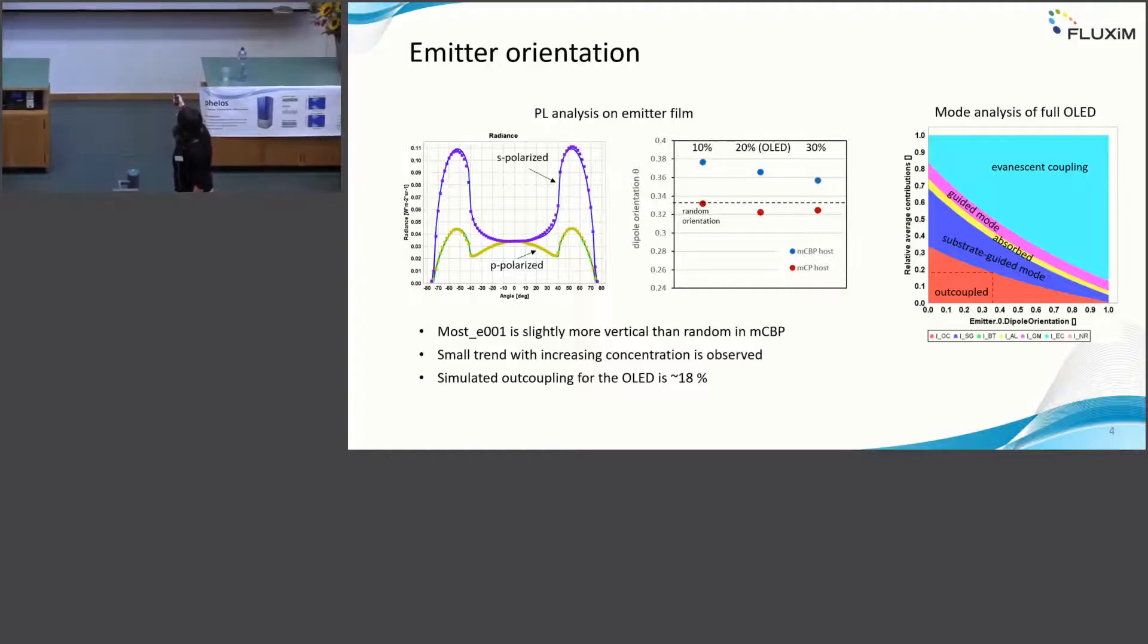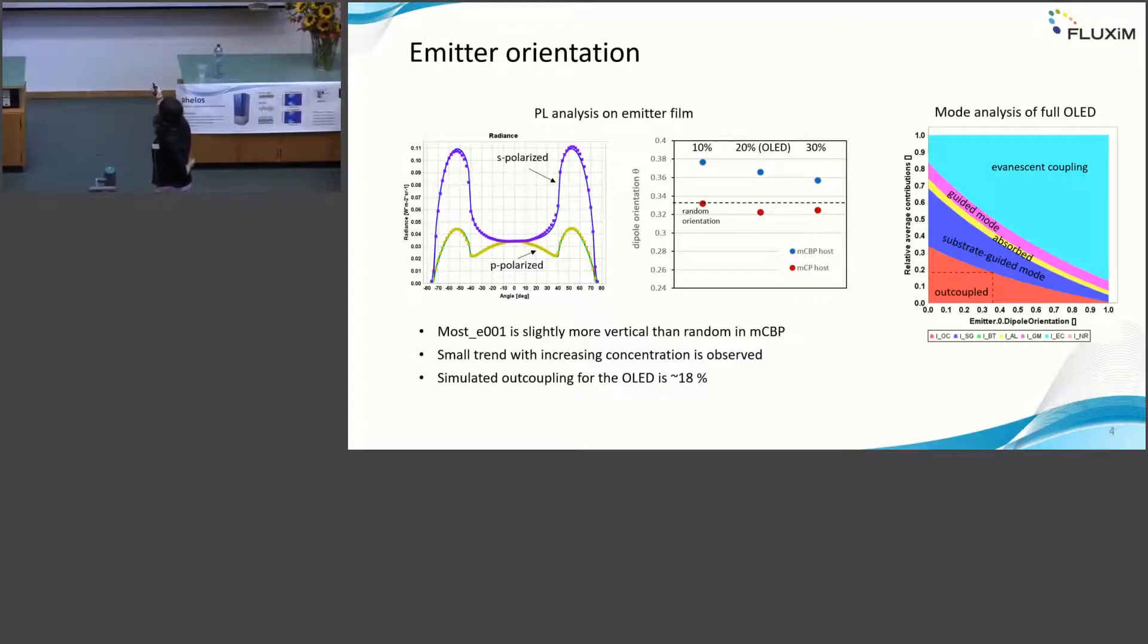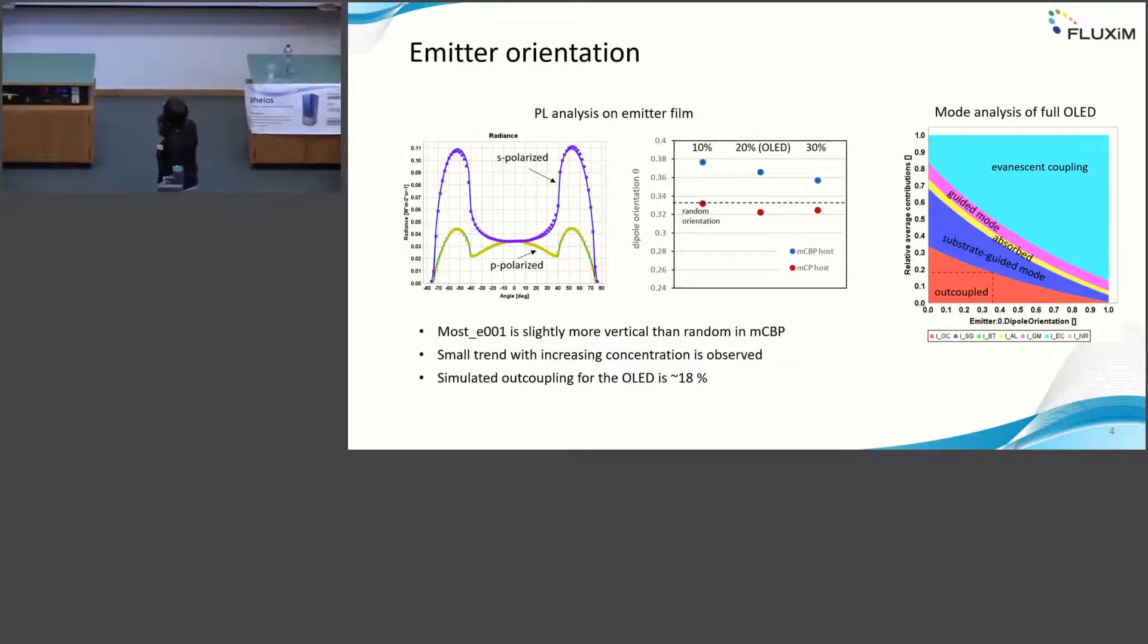As a reference, zero would be completely horizontal dipole orientation. One would be completely vertical dipole orientation. Theo Dresden fabricated some devices with different hosts and also different emitter concentrations. 20% would correspond to the OLED. It's more or less random for this MCBP host, and a bit more vertical for the MCBP host, which is actually used in the OLED afterwards.